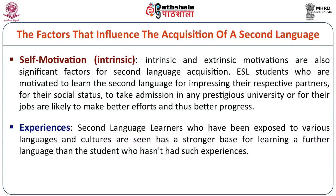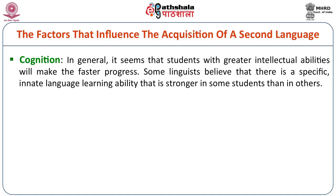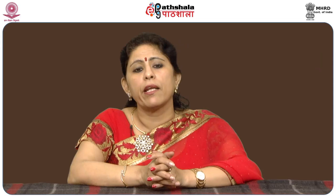Experience is another internal factor — second language learners who have been exposed to various languages and cultures have a stronger base for learning a further language than students who have no such experience. Cognition also plays a role: students with greater intellectual abilities generally make faster progress. Some linguists believe there is a specific innate language learning ability stronger in some students than others. Students learning a second language from the same language family as their first language are generally quick learners — for example, someone who knows German well will find it easier to learn English. External factors include curriculum — if language learning is in the curriculum, students must devote time, energy, and attention to it.